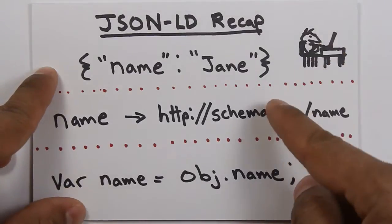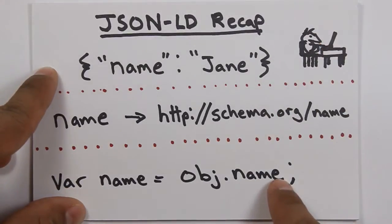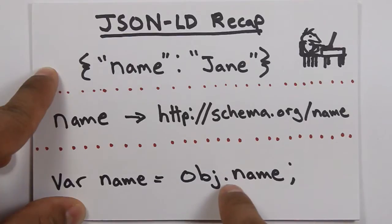For developers, JSON-LD is great because you can still continue to use the data like you did your JSON data before by referring to pieces of data using short IDs like this name.